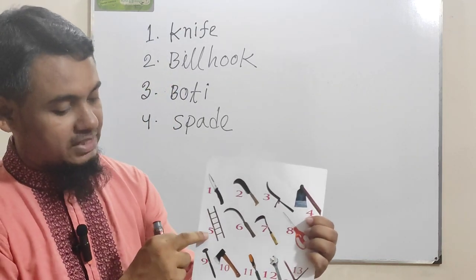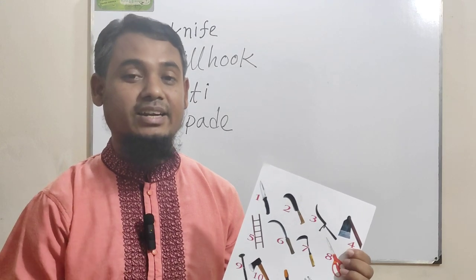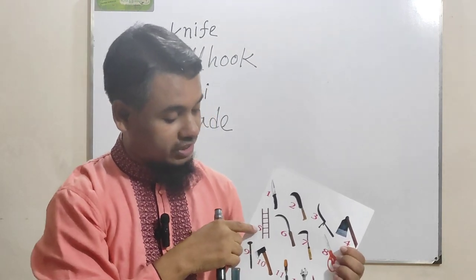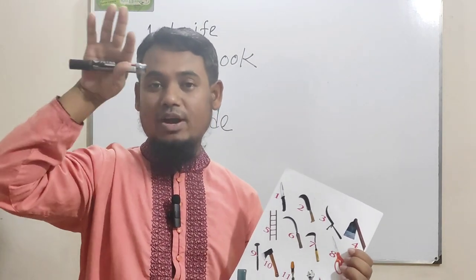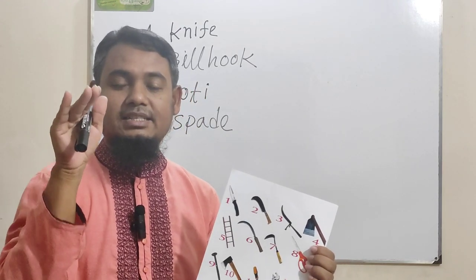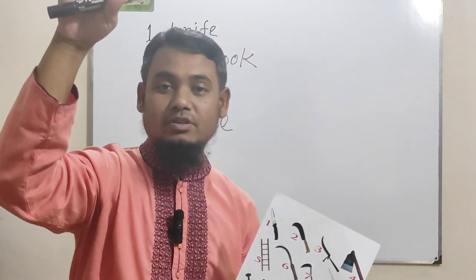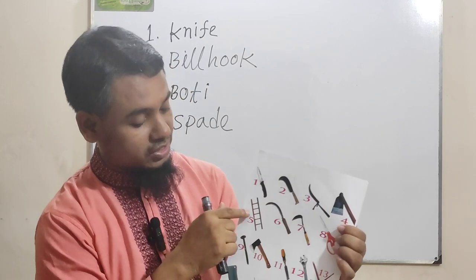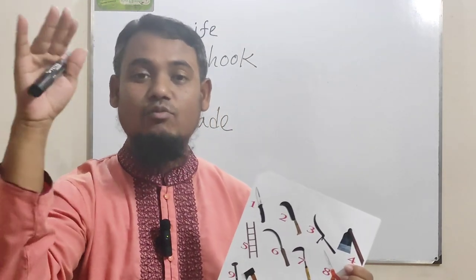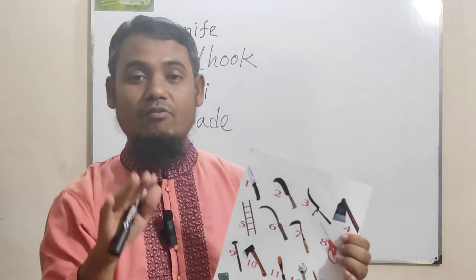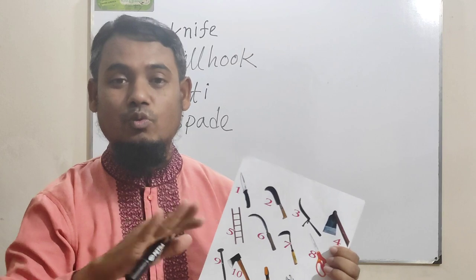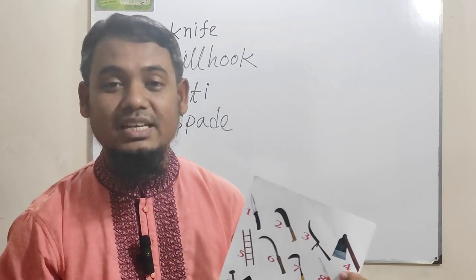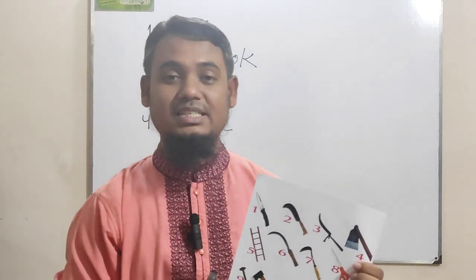Picture number five is ladder. Ladder is used to climb up to the roof. In some cases we use it to reach the ceiling fan while repairing it, because ceiling fans are set in a high position and we can't reach them by standing on the floor. Another use: farmers use this tool to level the soil in their crop lands. Picture number five is ladder.